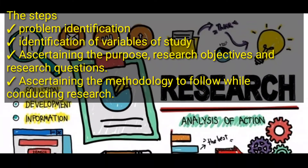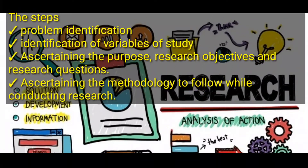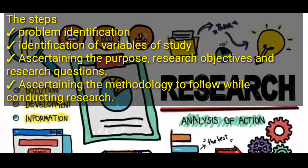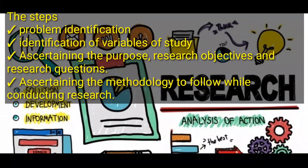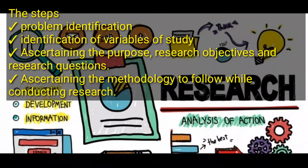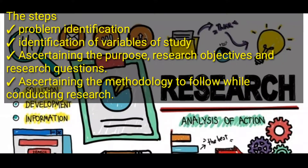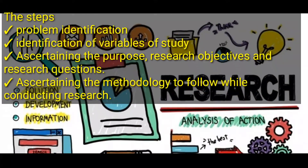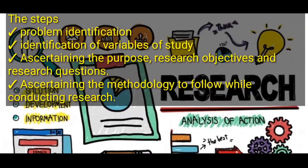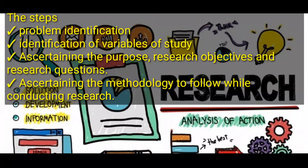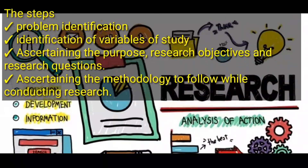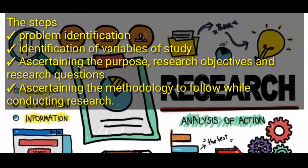After ascertaining the purpose, research objectives, and research questions, the next thing you do is ascertain the methodology to follow while conducting research. In our previous videos we saw that one of the characteristics of research was rigor, which means having a methodological design that is scientific and logical. So every research is supposed to have a methodological design to follow — that is the fourth step in the research process.